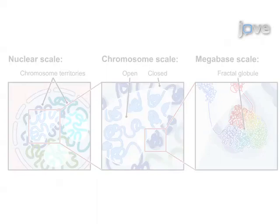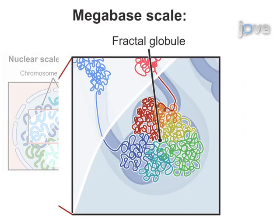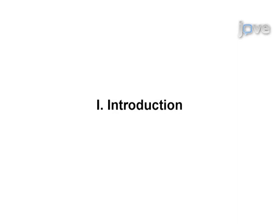These results provide us with insights into the folding of chromatin, revealing the presence of chromosome territories, the compartmentalisation of the genome in open and closed chromatin, and evidence for the fractal globule organisation at the megabase scale.